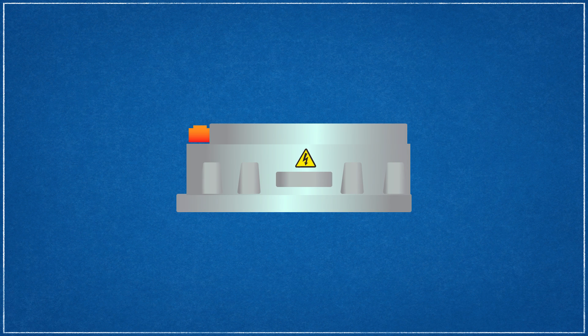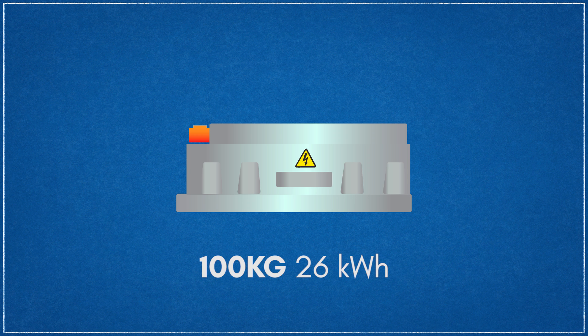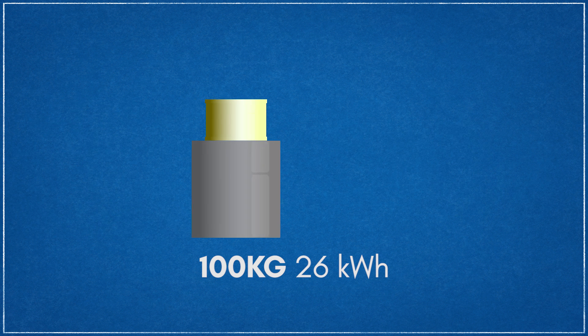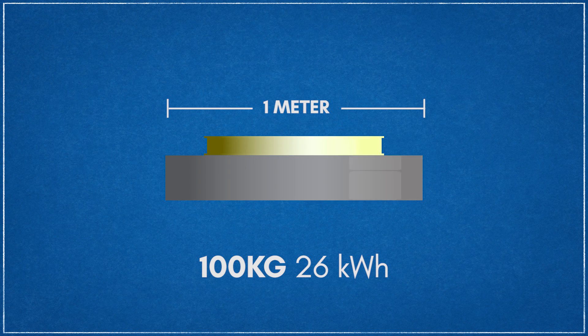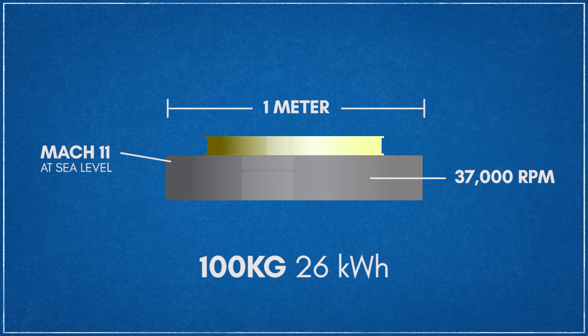Let's say we wanted to replace a 100kg lithium-ion battery pack in a hybrid vehicle with a flywheel energy storage system. To achieve the 26kWh capacity of the battery pack with a 100kg flywheel, it would need to be 1m in diameter and spin at over 37,000 RPM to achieve this. At this speed, the outer edge of the flywheel would be spinning at over 11 times the speed of sound. Packaging and safely containing such an energetic moving component would be cost-prohibitive with current materials when compared to chemical batteries for a similar performance.